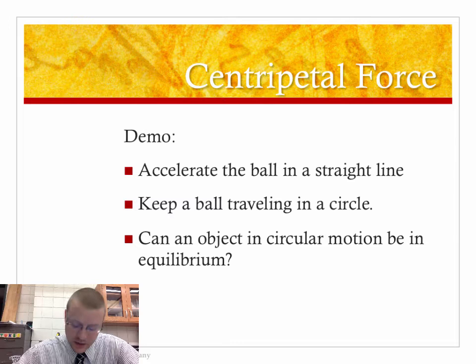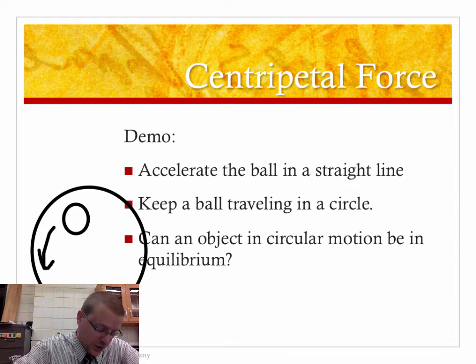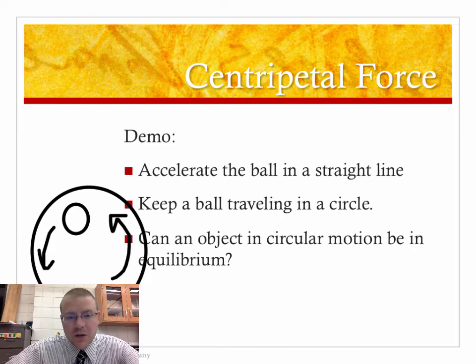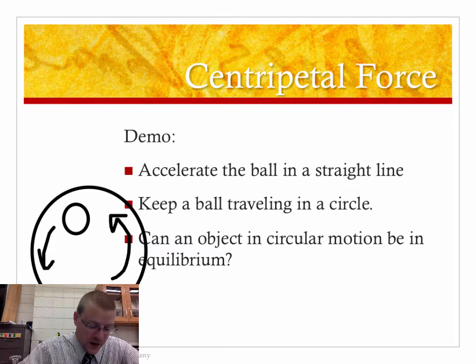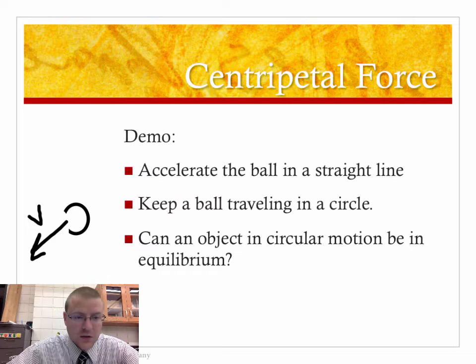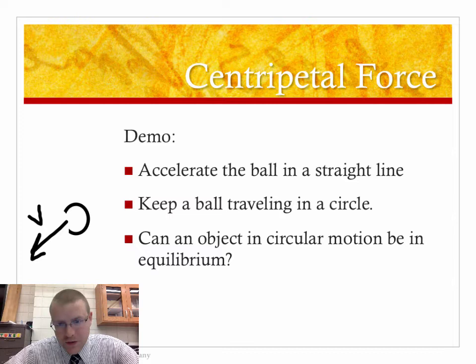Hey everyone, we're looking at centripetal forces in this section. We did the tape challenge today, where you rolled a ball around the inside of a curve, and the question was where does this ball want to go? As soon as you lift the edge of the tape, due to inertia, objects in motion want to stay in straight-line motion. So when you lift that up and the circle disappears, that marble wants to go off tangent to the circle. That's why it's called a tangential or linear velocity — your object wants to leave the circle if ever possible.